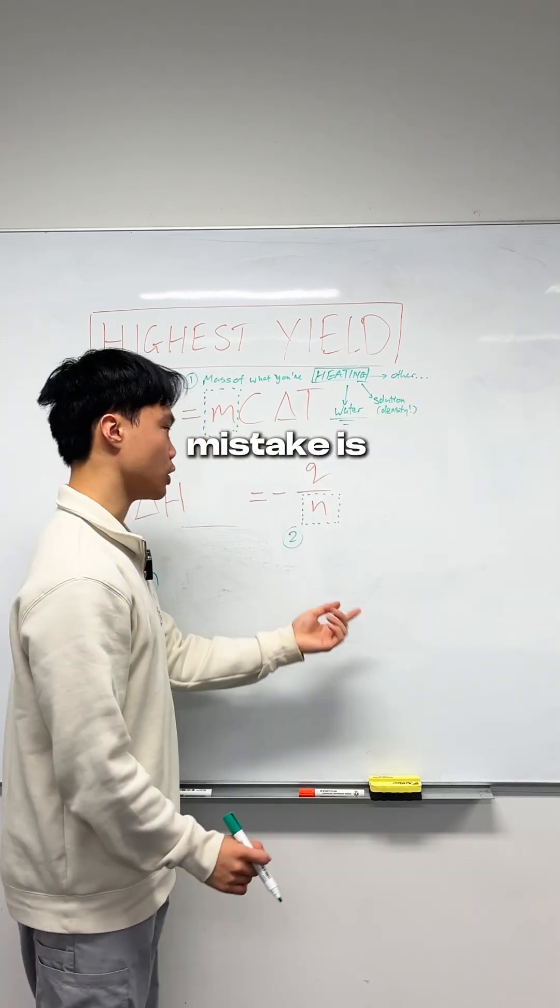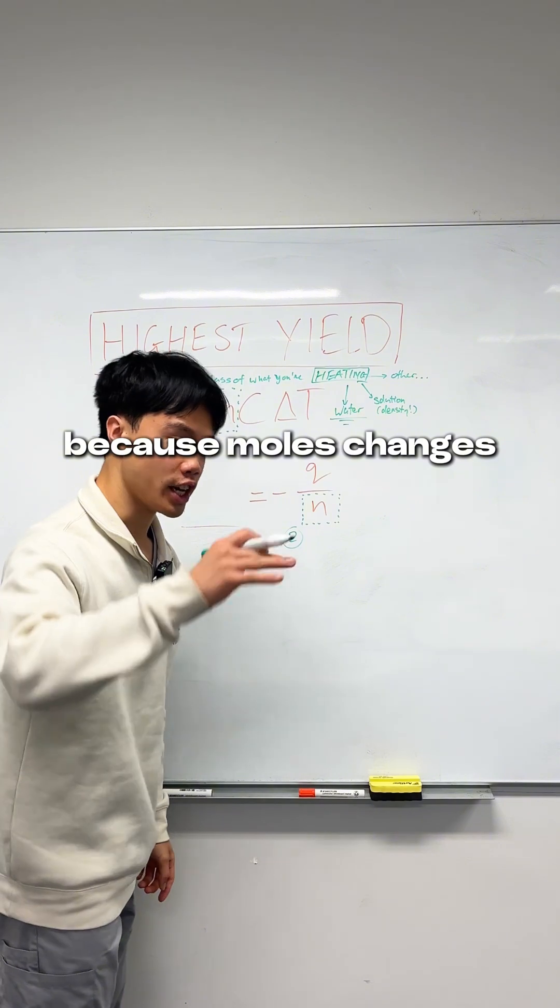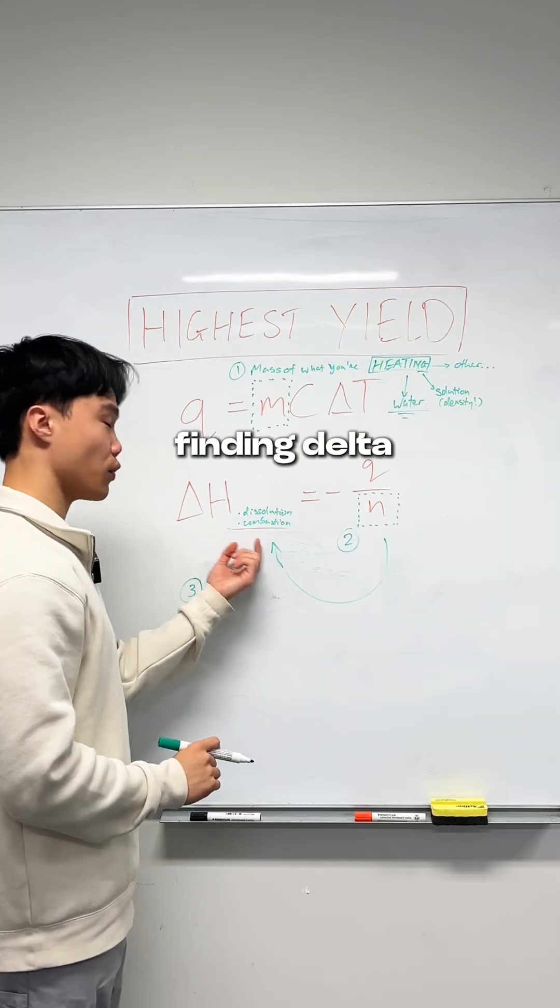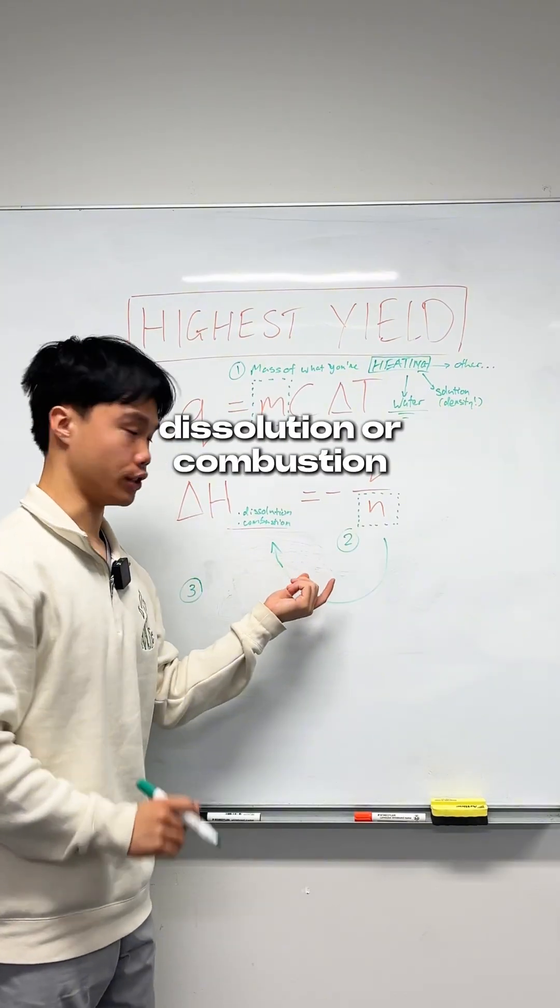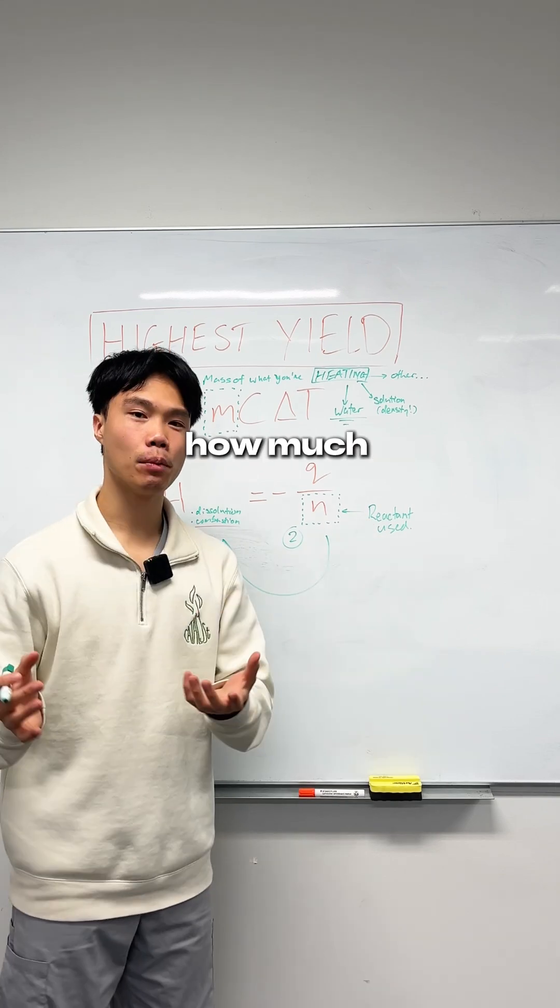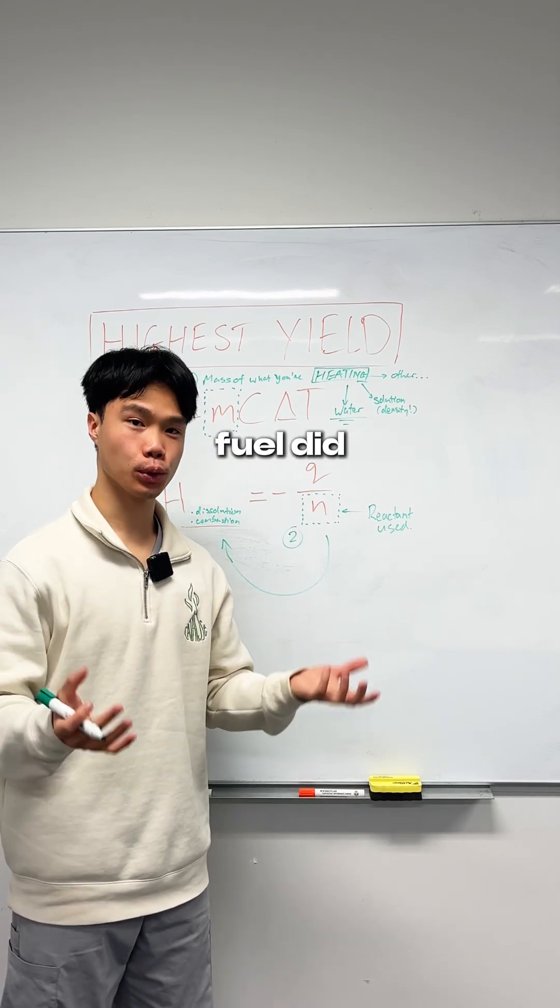The second and most common mistake is mixing up the moles, because moles change depending on what reaction you're doing. If we're finding delta H from a dissolution or combustion, n refers to the reactant used. How much solute did you dissolve or how much fuel did you burn?